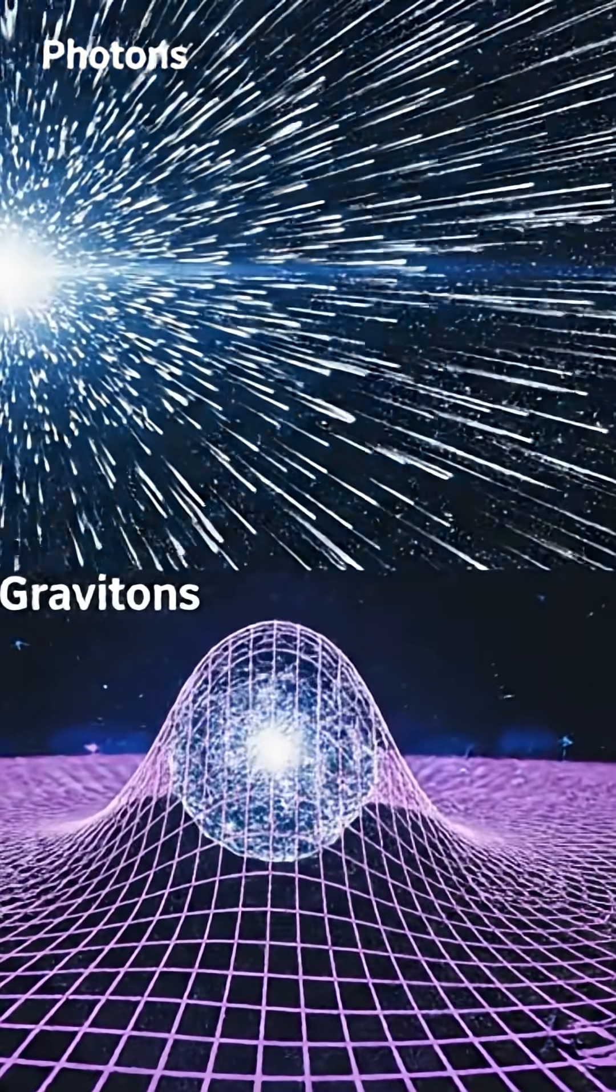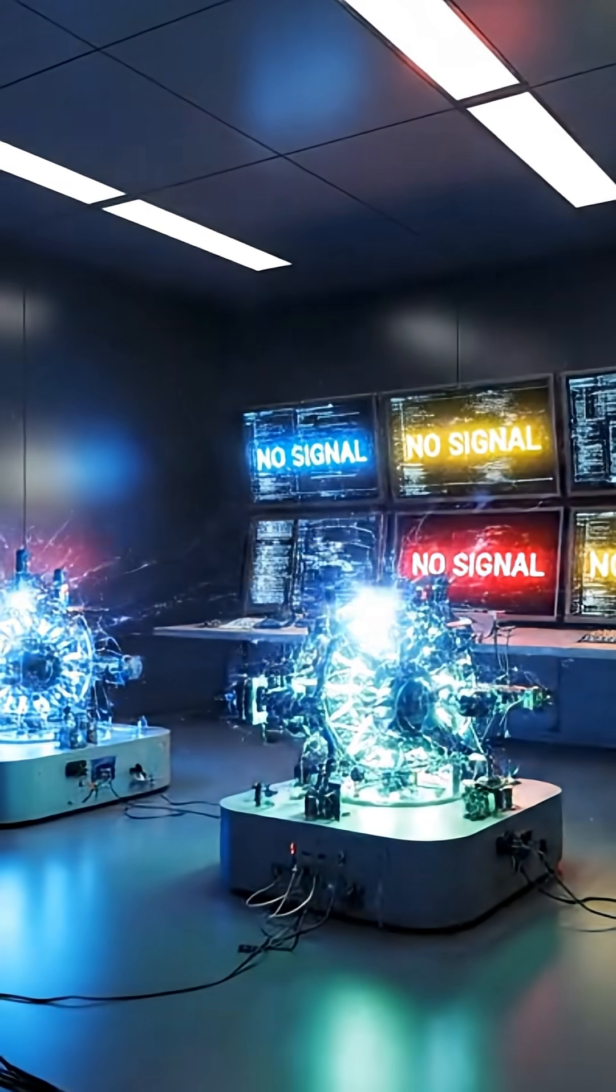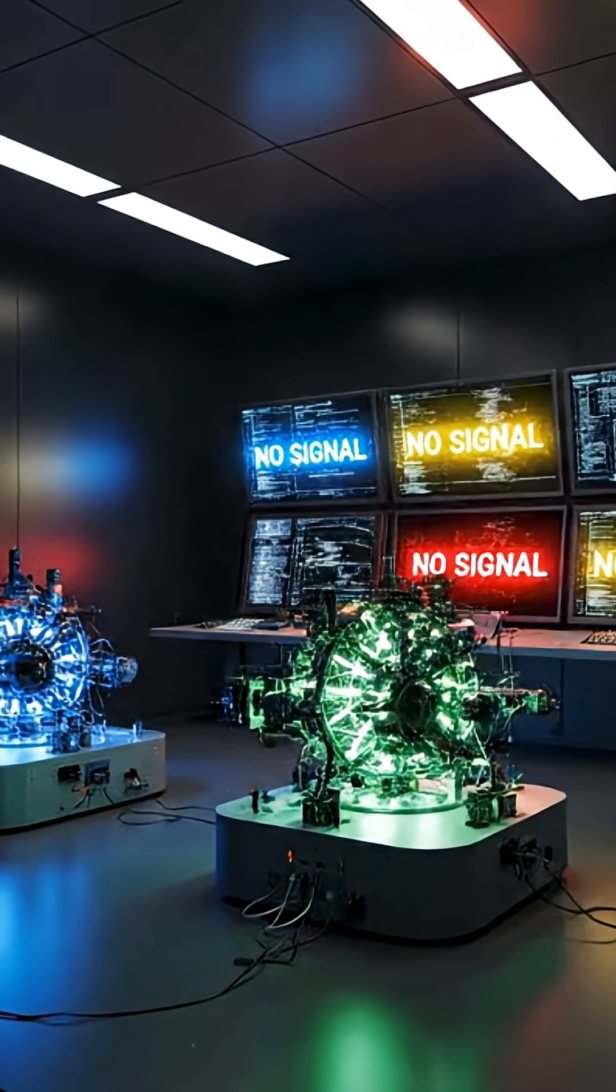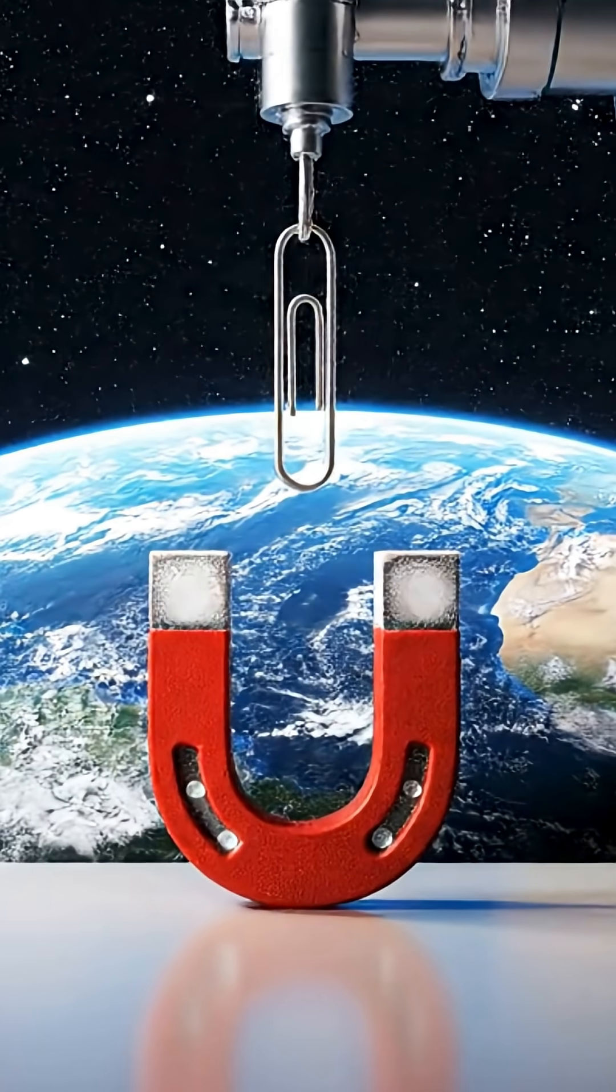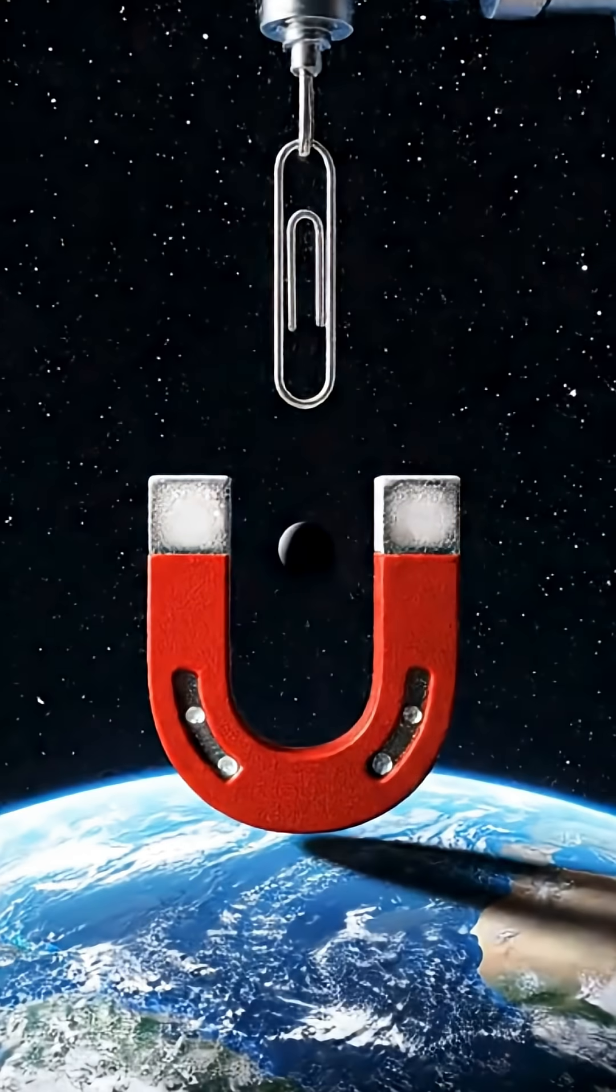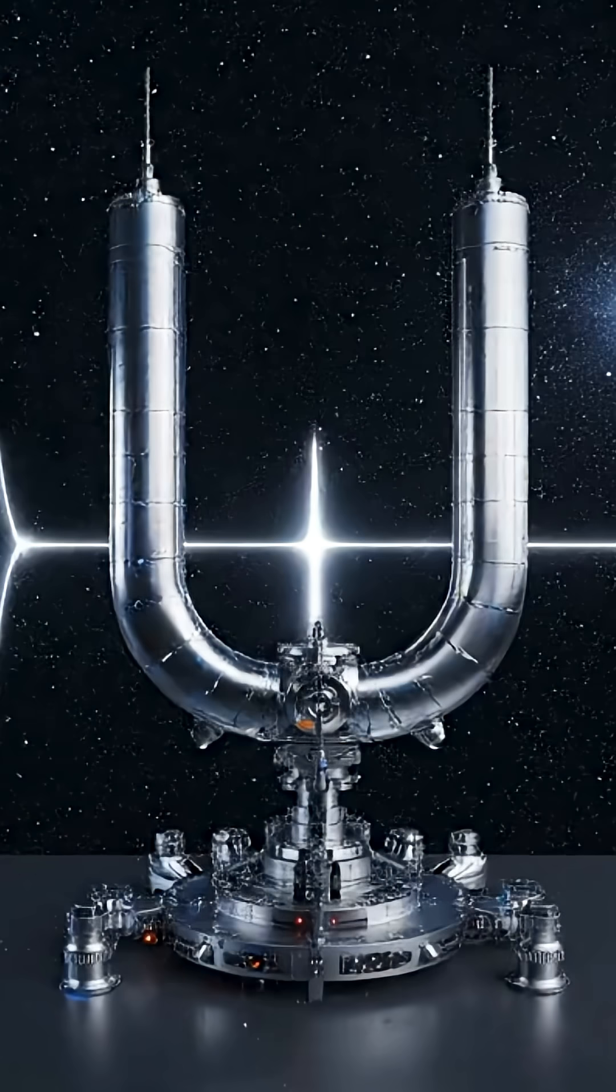Here's the crazy part, we've never detected one. Why? Because gravity is unbelievably weak. That little fridge magnet on your door? It's beating the entire Earth's gravity. A single graviton is so faint, we'd need a detector the size of Jupiter. And even then, it might not work.